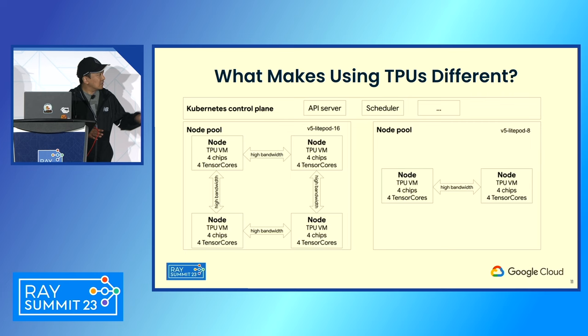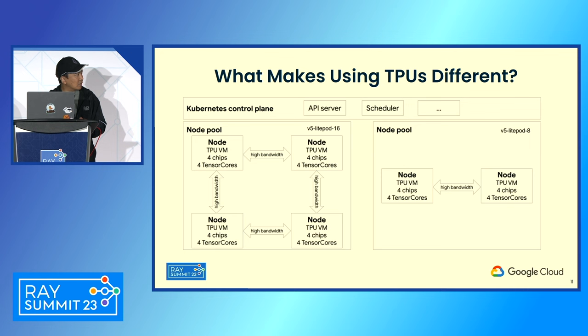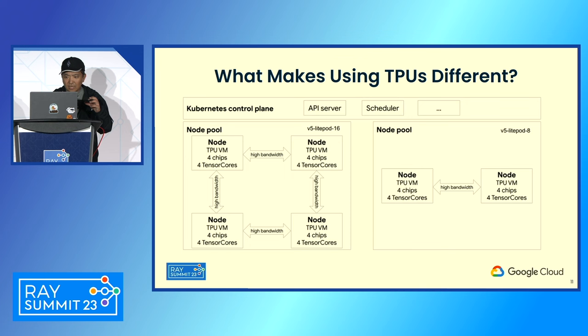For TPUs, it's a little bit different. Inside each TPU, you will see four chips connected to a single host connected by ICI, which is our inter-chip interconnect. In Kubernetes, when you're scheduling workloads, each workload is going to be on a pod. The pod is going to reserve all the TPU chips attached to a host.